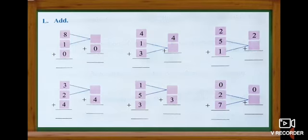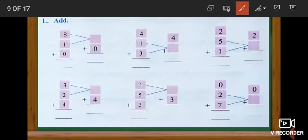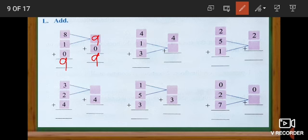Shall we do some sums? Part L — Add. Here how they are: eight, one. Eight plus one — what we get? Nine. So with nine we are going to add zero. Nine plus zero — when we add the number with zero we get the same number. Nine. So here also we add the three numbers and we get nine.